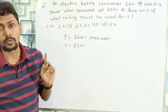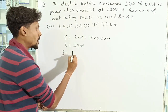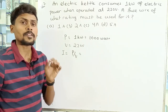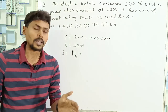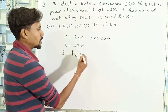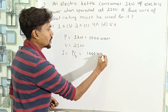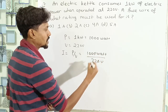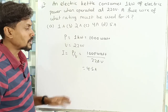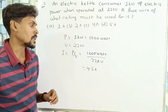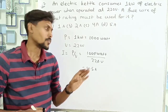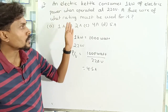The power is 1000 W and the voltage is 220V. Using P = VI, the current is equal to power divided by voltage: 1000 divided by 220, which is around 4.5 Ampere. That means 4.5 Ampere of current flows through the kettle during normal operation. The options are 1 Ampere, 2 Ampere, 4 Ampere, and 5 Ampere.